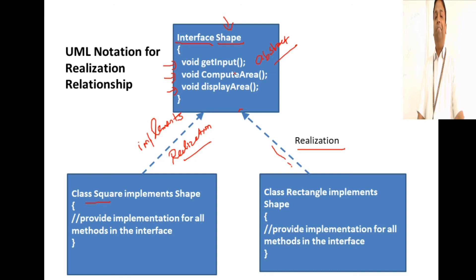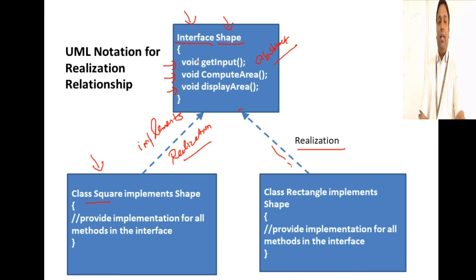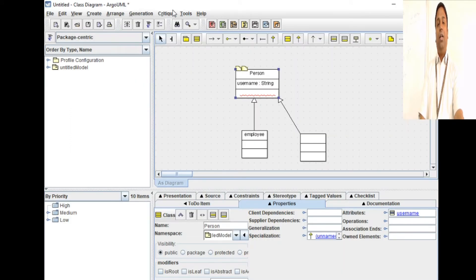Let's go and create a shape class. I'll create a shape interface and then a square class, and try to establish the realization relationship between these two classes. This means that the interface is being implemented by the class, so it should provide the definition for all the abstract methods in the interface.